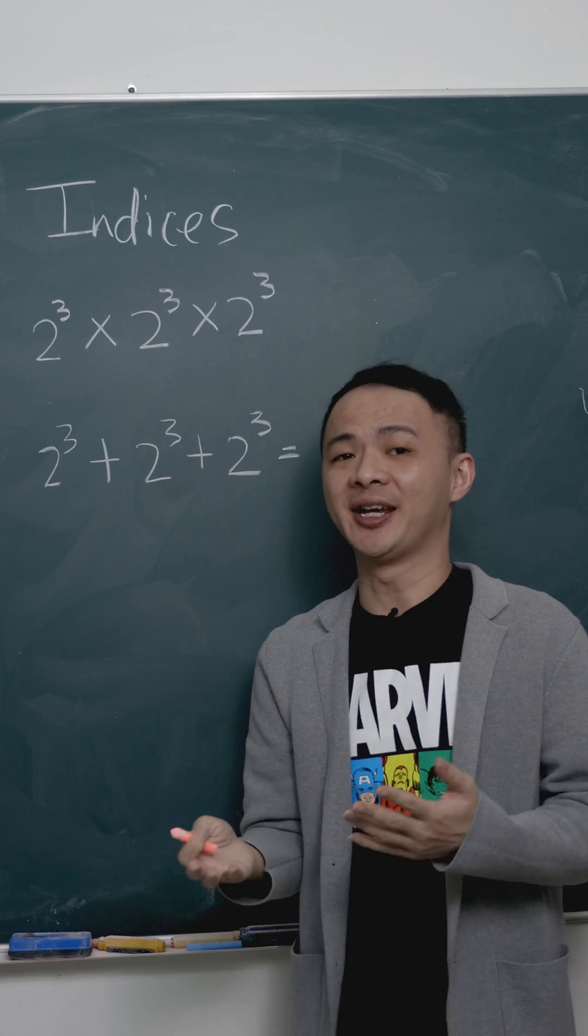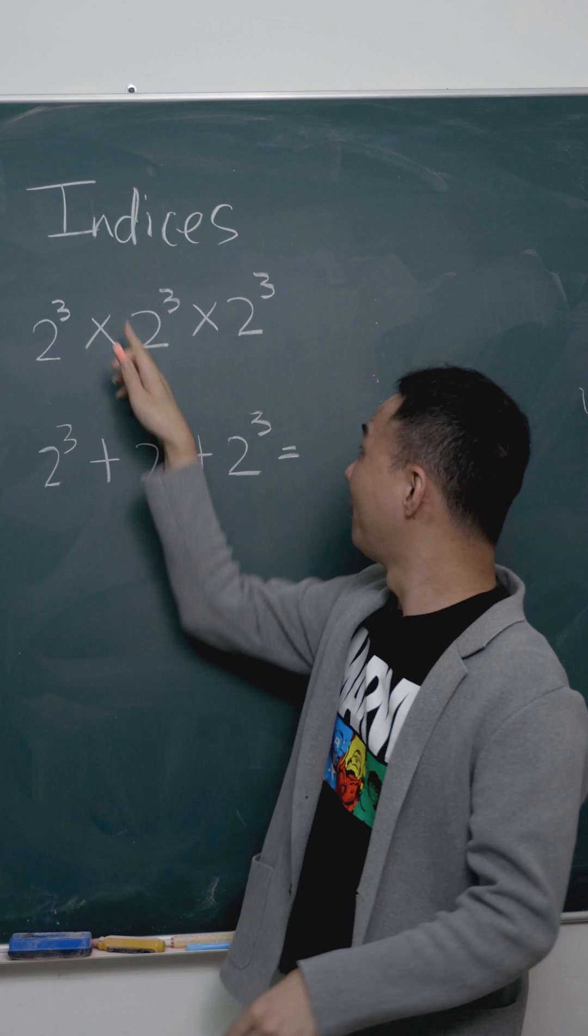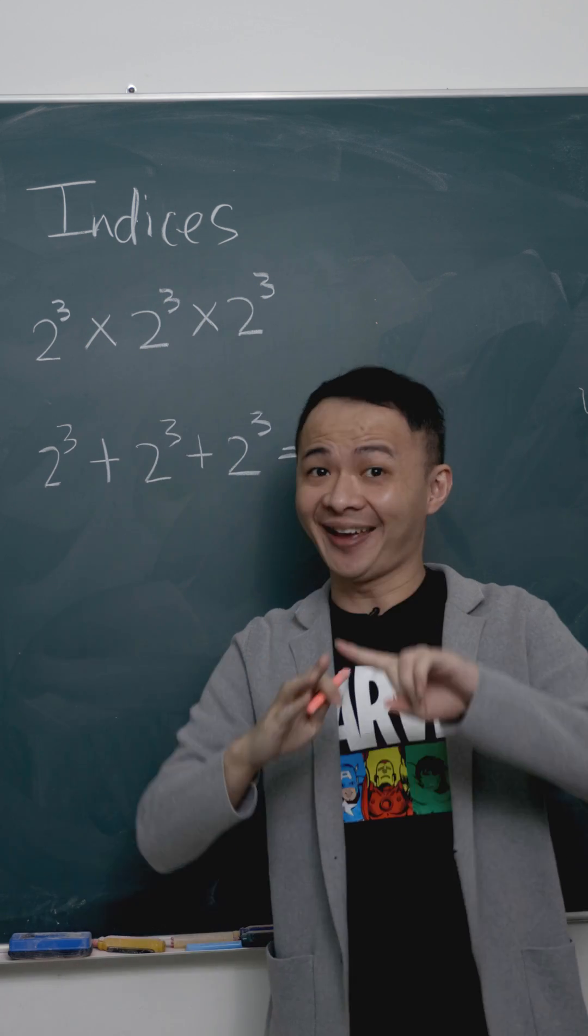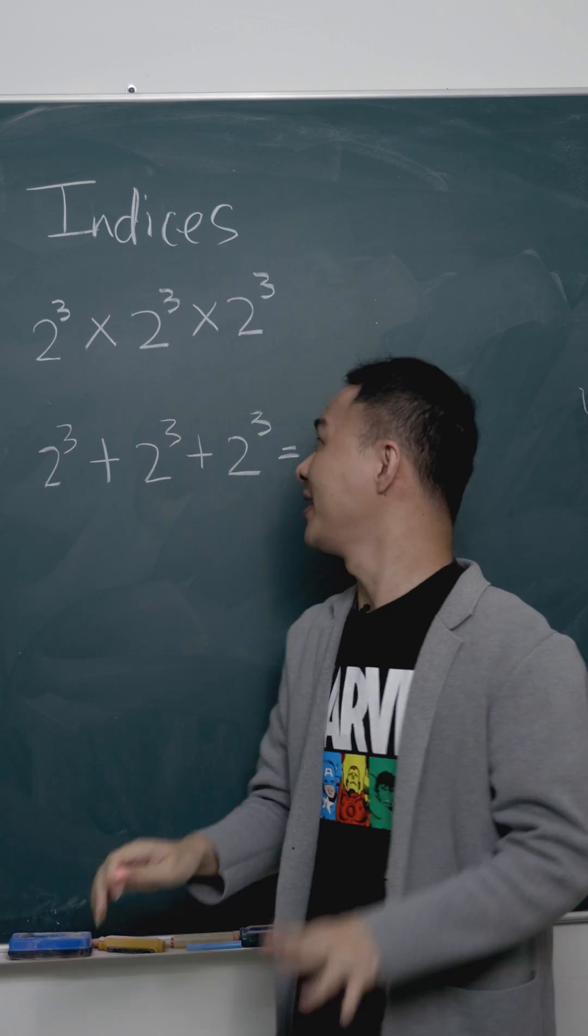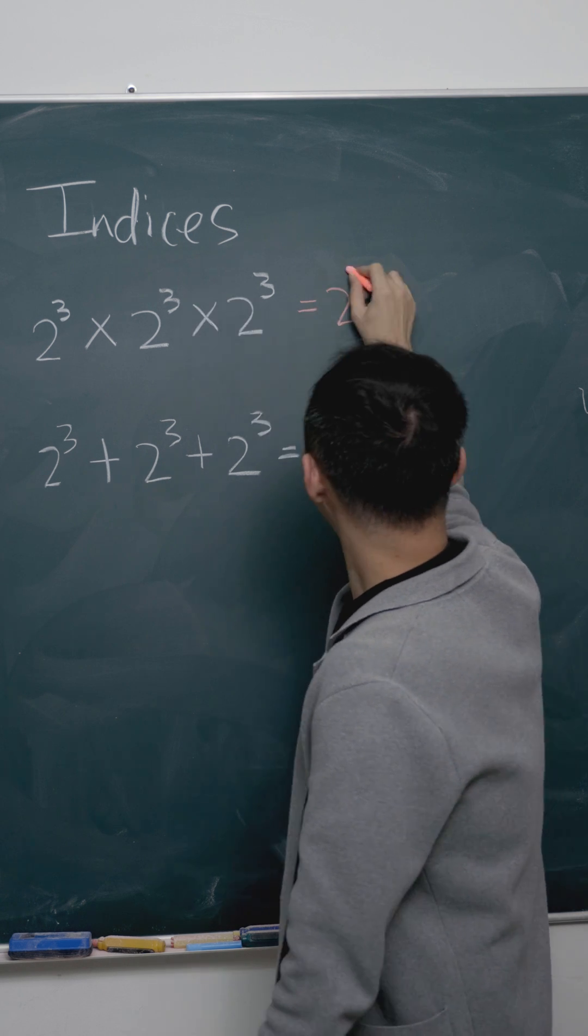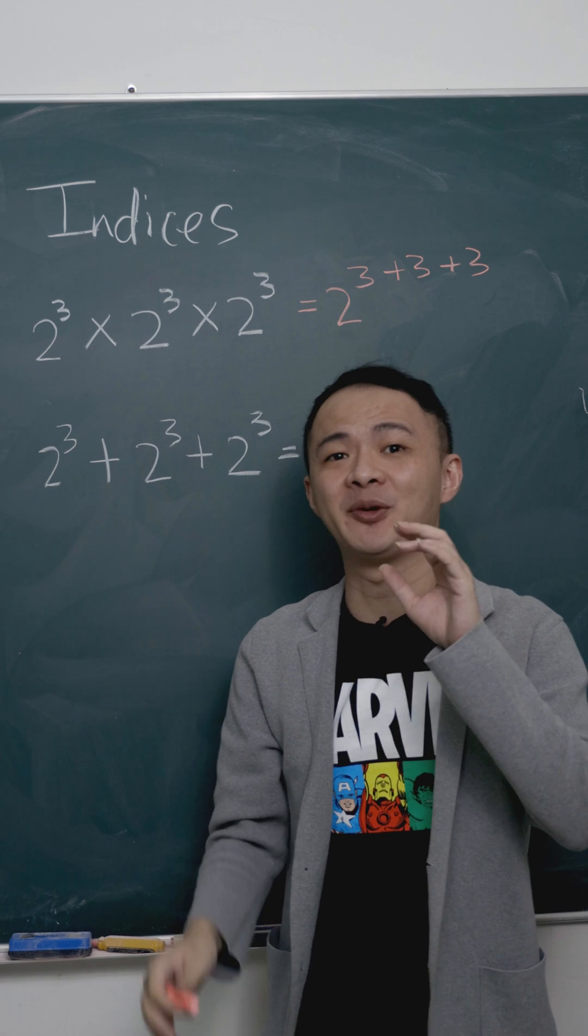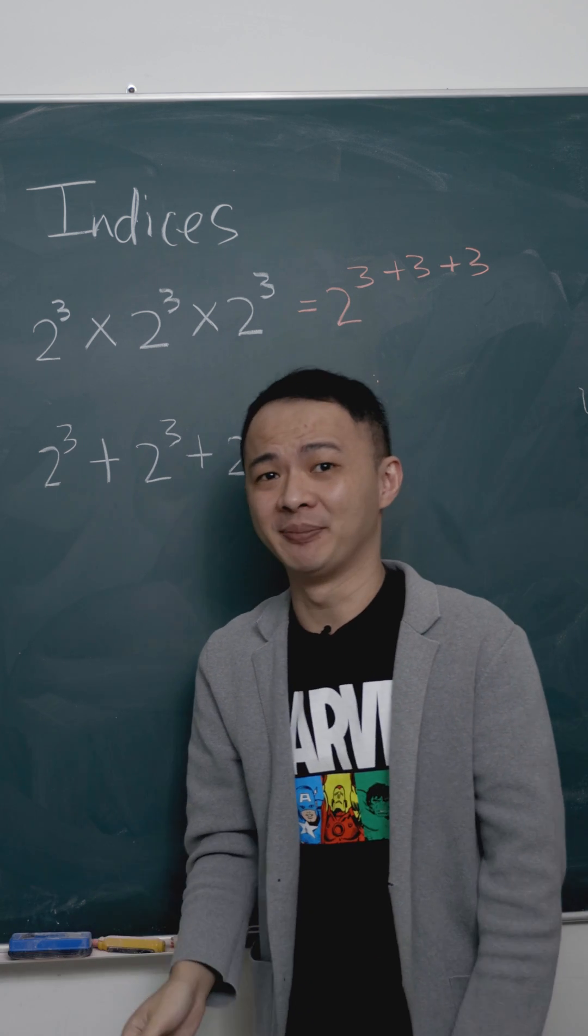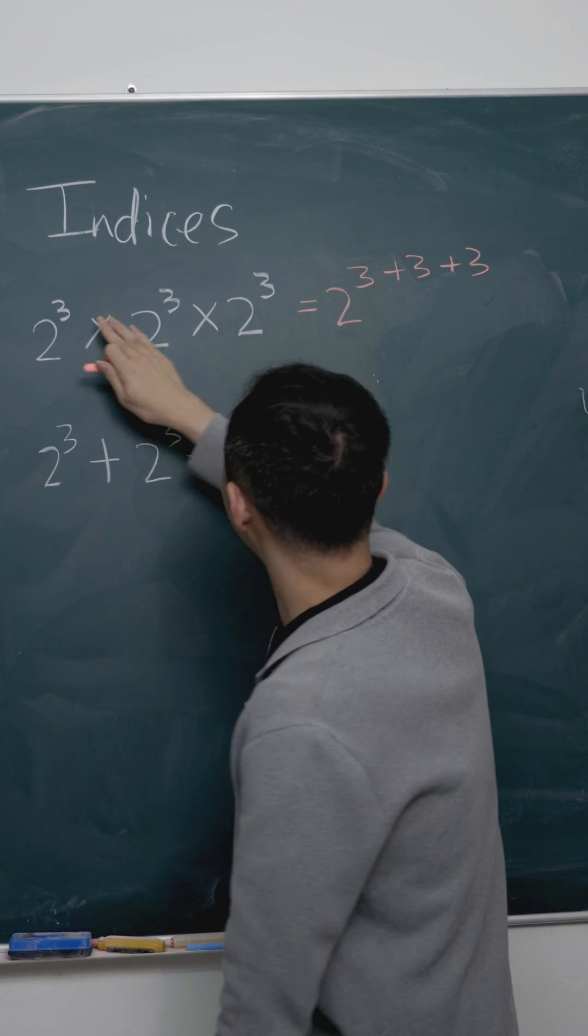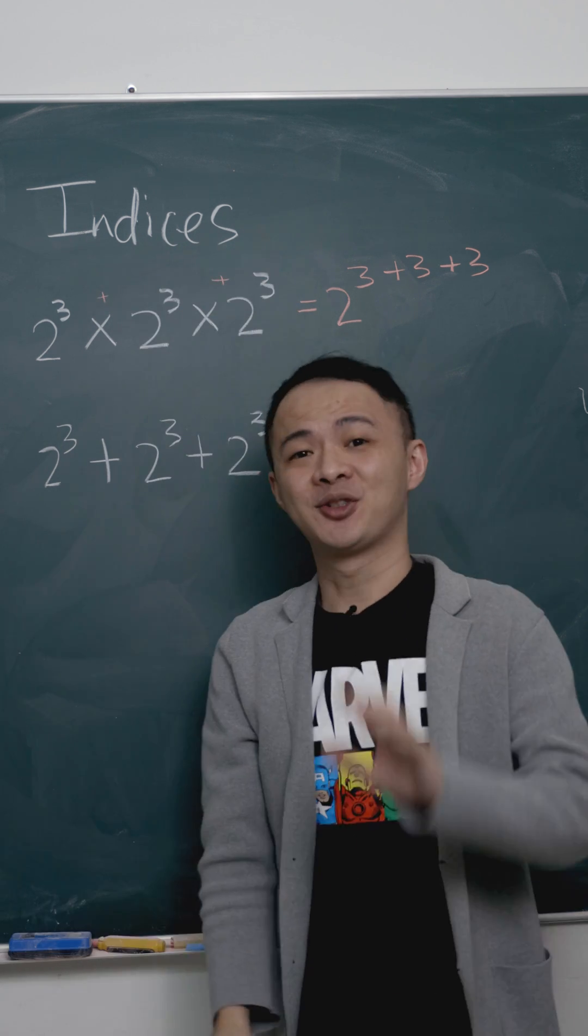We all know when we multiply, basically we need to add all the powers together. What I mean is this one I can say is 2 power of 3 plus 3 plus 3. This is what I mean when I say add all the powers together - basically I just add them when I multiply.